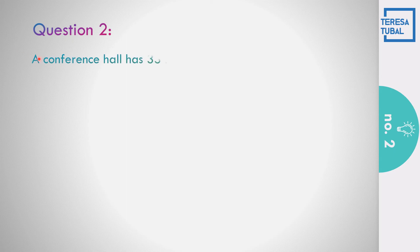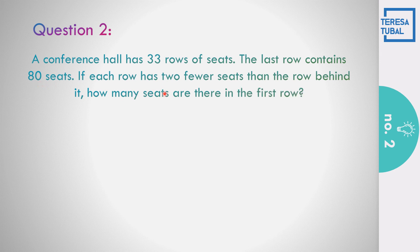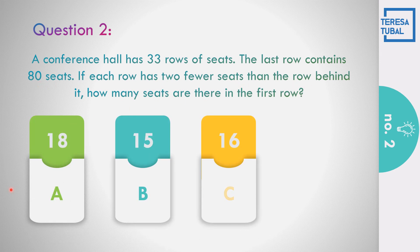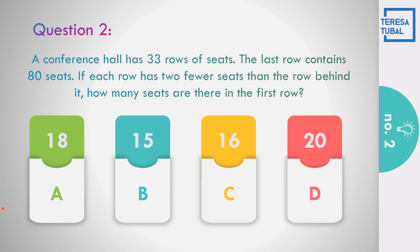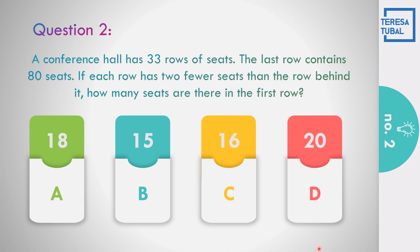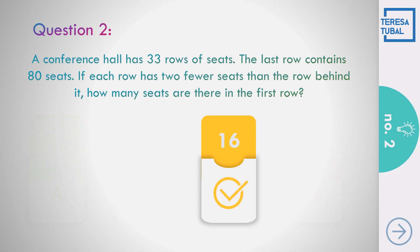How about number 2. A conference hall has 33 rows of seats. The last row contains 80 seats. If each row has 2 fewer seats than the row behind it, how many seats are there in the first row? A: 18, B: 15, C: 16, D: 20. What do you think is the answer? Correct. The answer is 16.